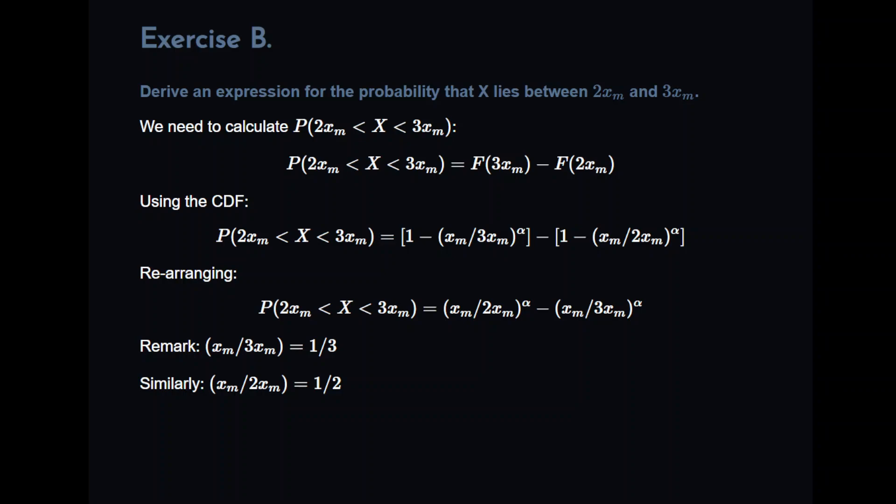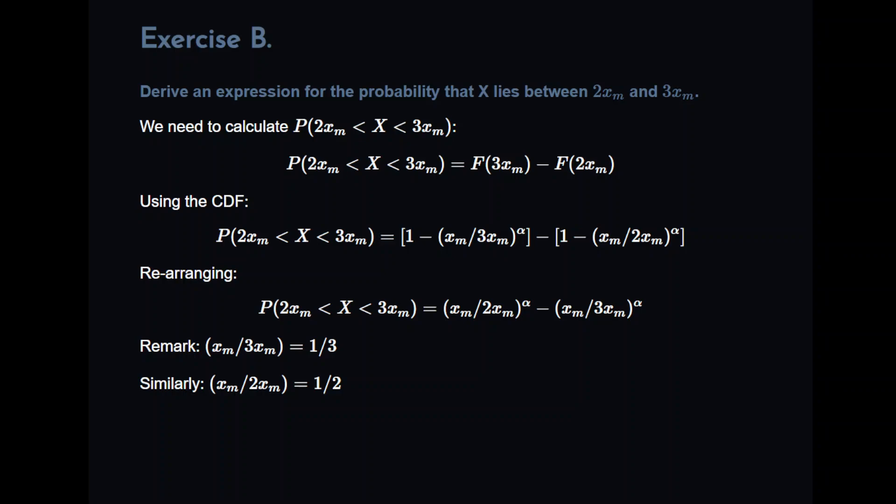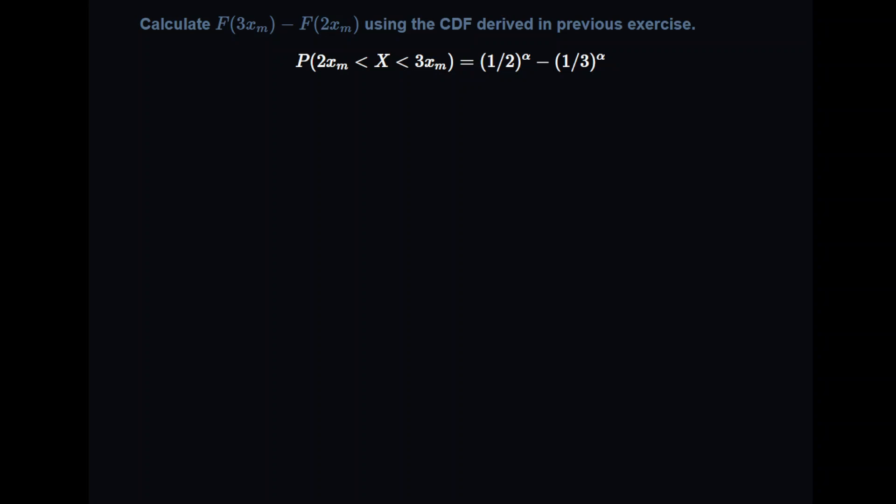Now essentially what we can do there is just rearrange that equation algebraically similar to what we have done before. What we end up with is XM divided by 2XM to the power of alpha minus XM divided by 3XM to the power of alpha. Now XM divided by 3XM is simply 1 third. And similarly, XM divided by 2XM is 1 half. So this actually works out very quickly. What we end up with is the interval probability that we are looking for, the probability of X being between 2XM and 3XM, is simply 1 half to the power of alpha minus 1 third to the power of alpha. Now remember we are not actually asked for any calculations. We just are asked to derive an expression, and that is the expression that we need.